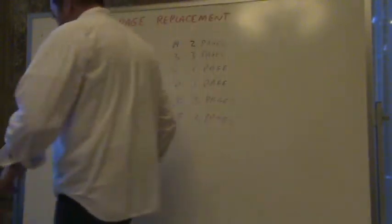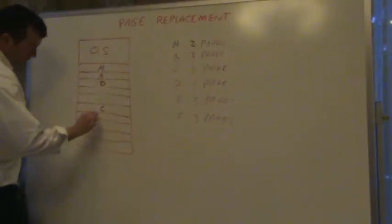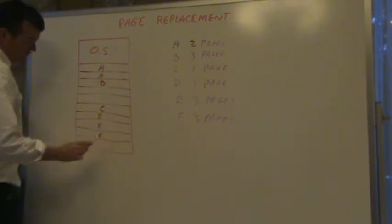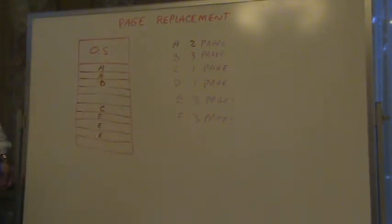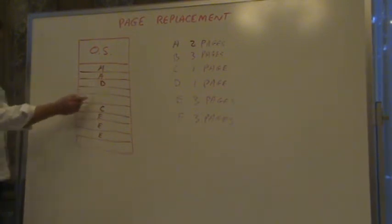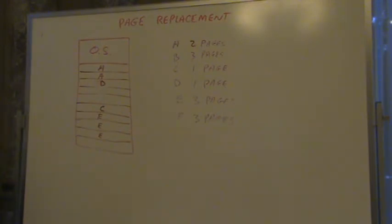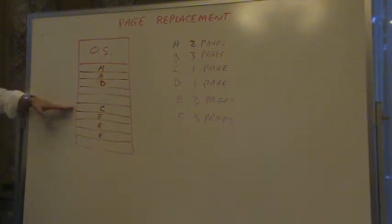So now if E comes in and needs three places, if we wanted to do them contiguously, we'd put E, E, E here. Then F comes in and we don't have room for F if we want to do it contiguously. We could put F here, here, and here, but then we'd have to create a table because we're scattering. Could you force C to move and put F in those spots? Could the processor move C's location while it's running?